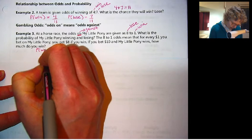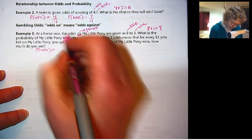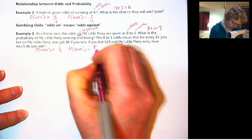So the probability of winning. Well, this is one chance of winning to eight chances of losing. So our total is eight plus one, or nine. So winning is only one out of nine. The probability of losing is eight out of nine.